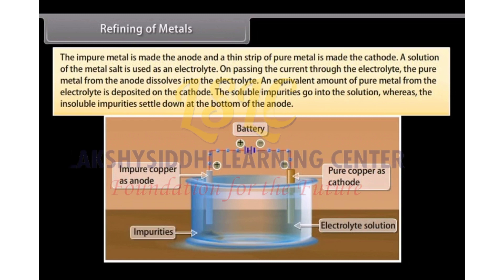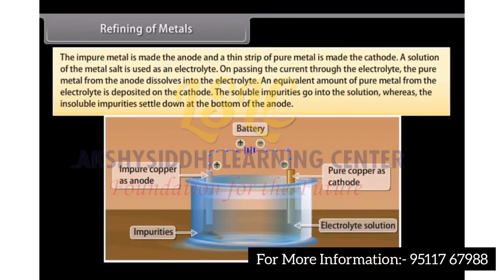The soluble impurities go into the solution whereas the insoluble impurities settle down at the bottom of the anode. These are known as anode mud.